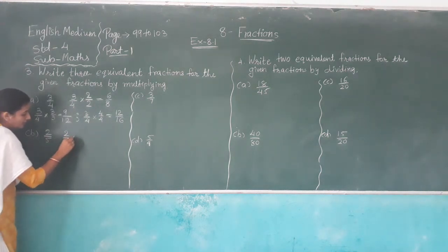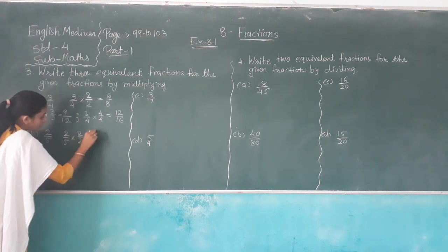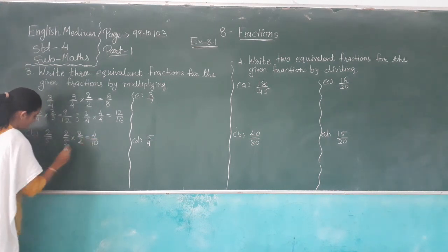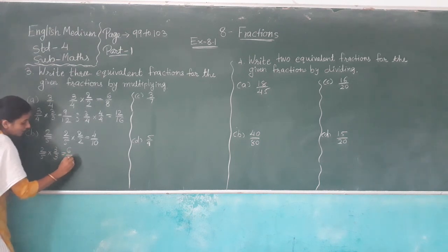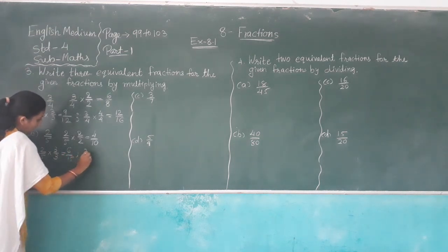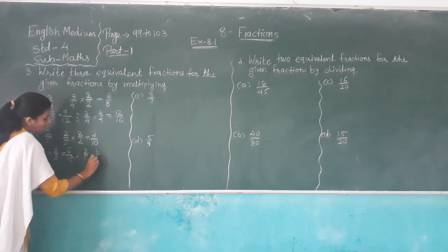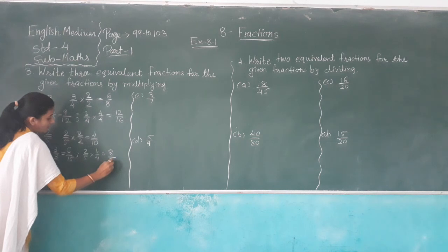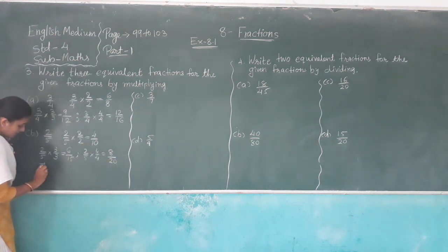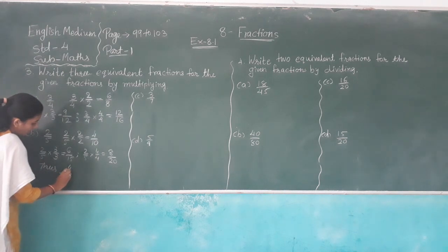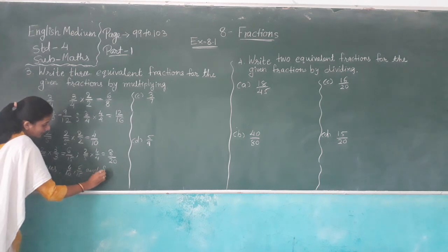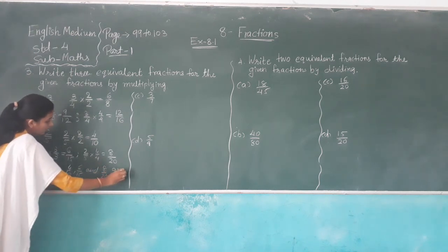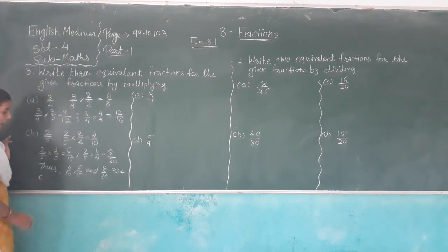Two out of five multiplied by two over two: two times two is four, five times two is ten. Then two out of five multiplied by three over three: two times three is six, five times three is fifteen. Then two out of five multiplied by four over four: four times two is eight, five times four is twenty. So four out of ten, six out of fifteen, and eight out of twenty are equivalent fractions of two out of five.